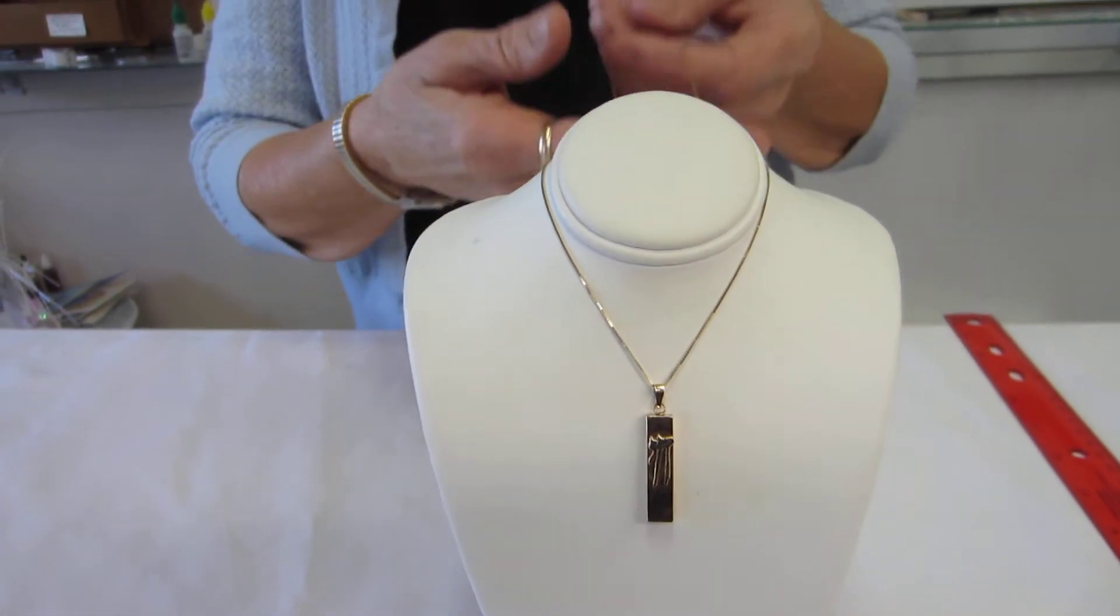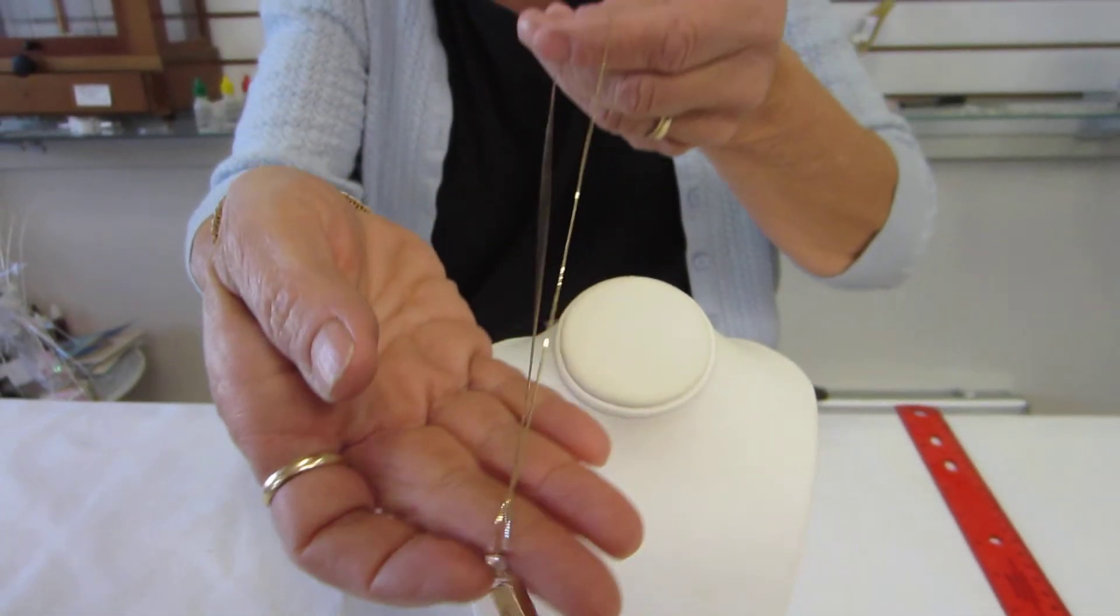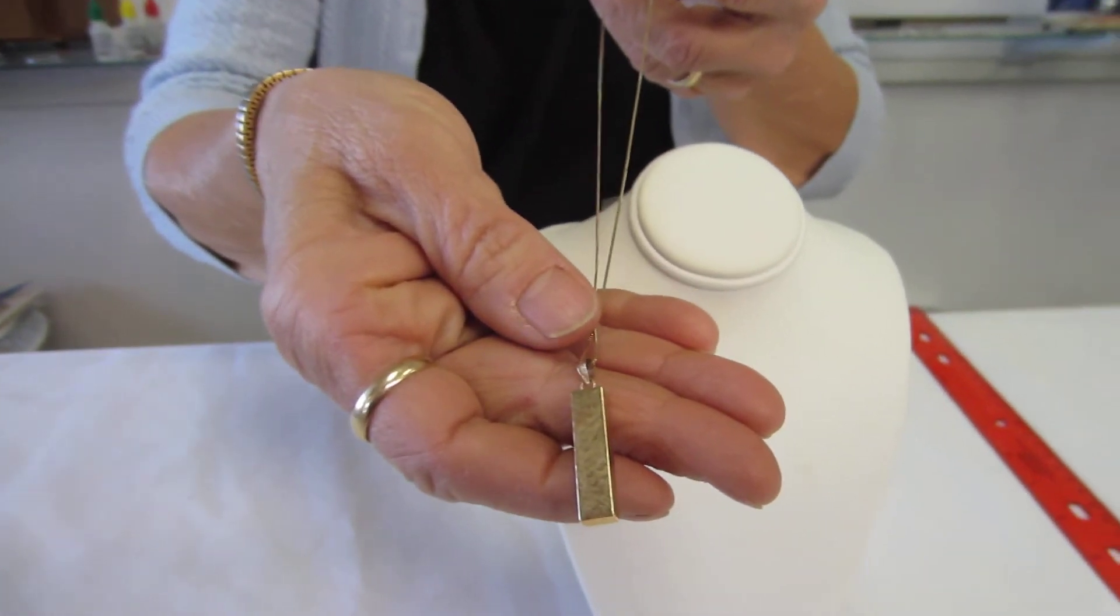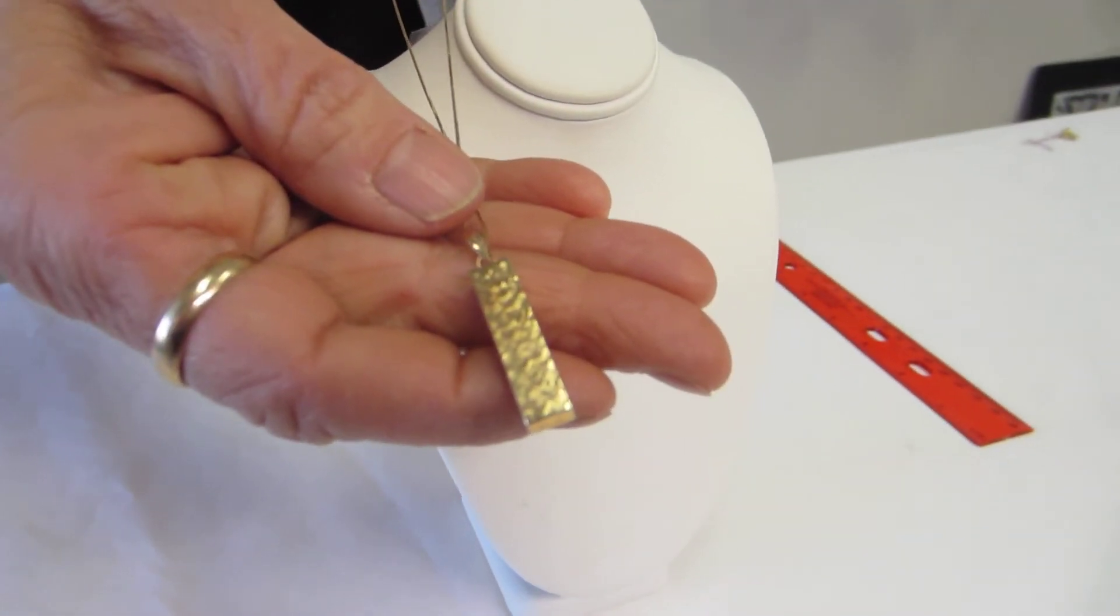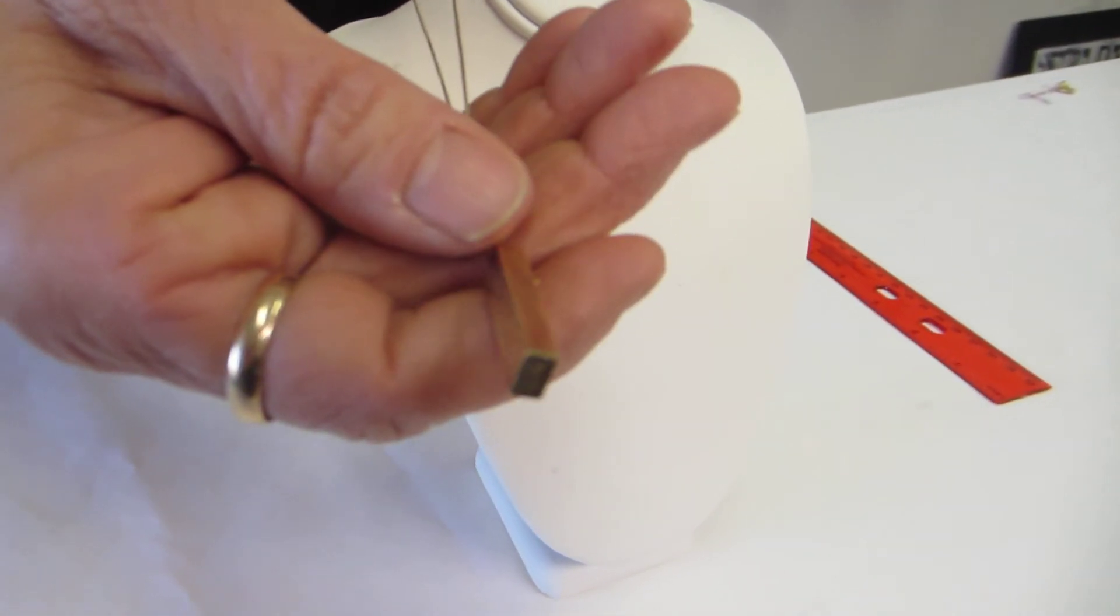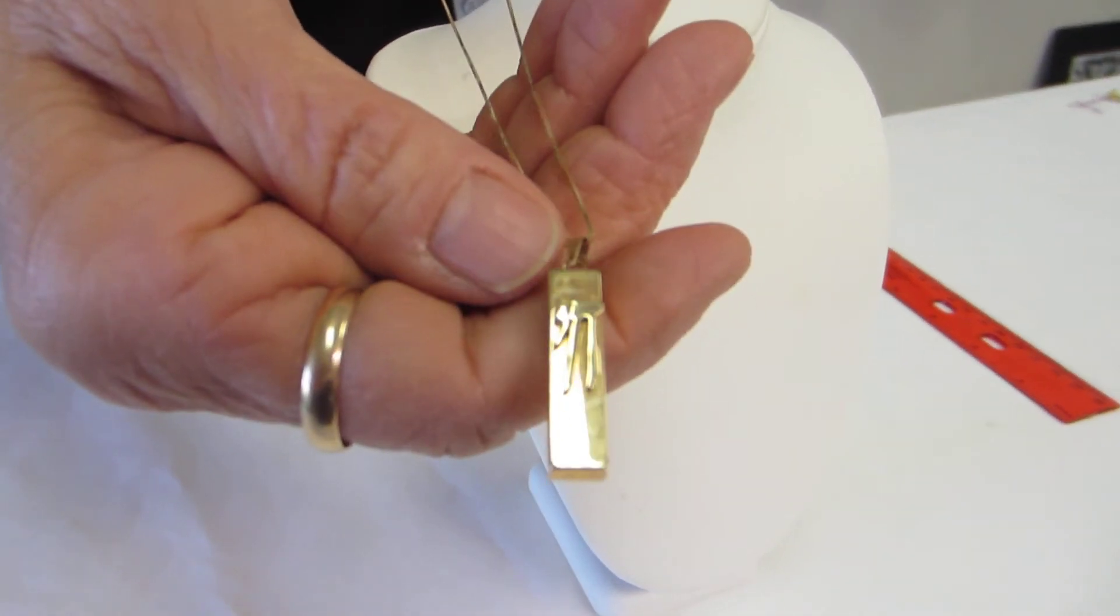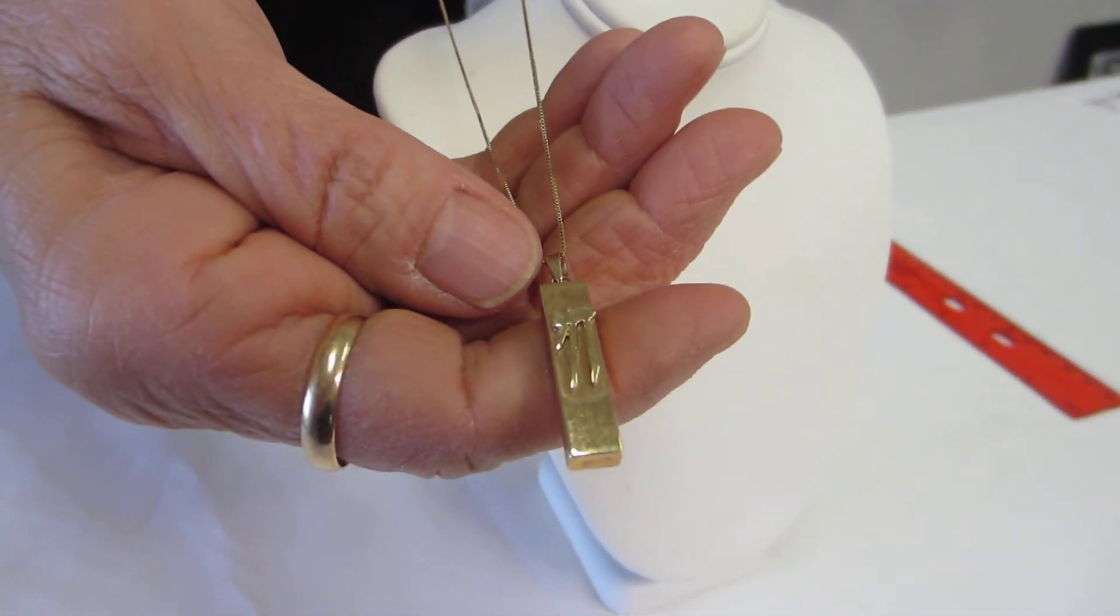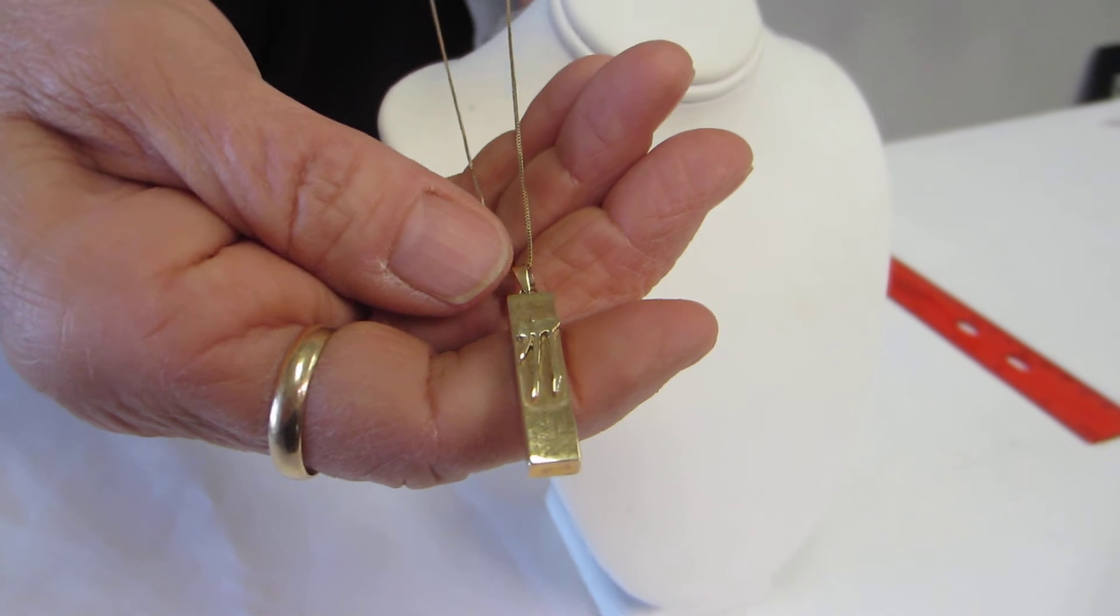This beautiful pendant, the back has a texture on it, the sides are smooth finished, and we have the elongated chai for life on the front of this pendant.